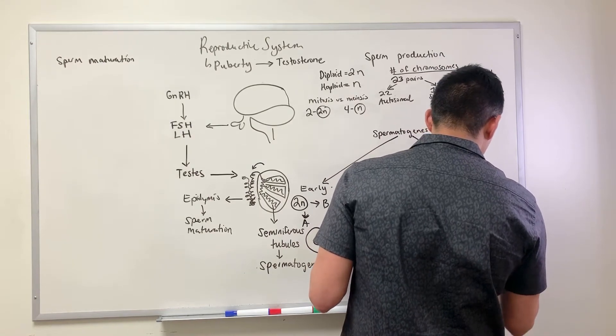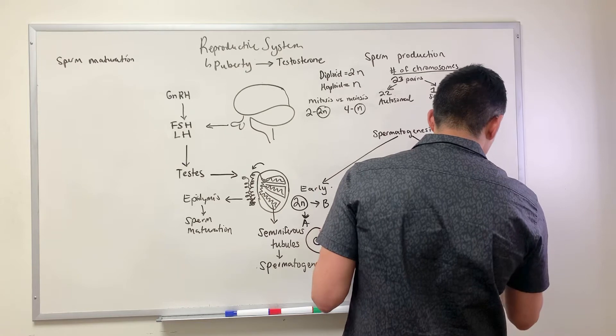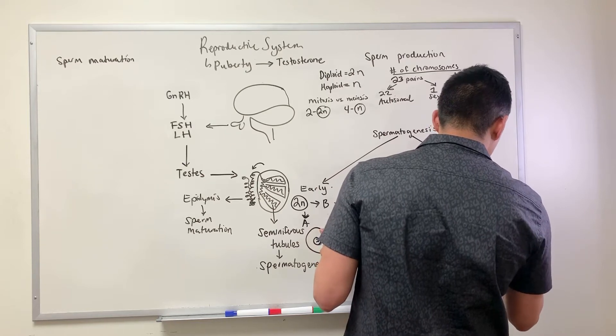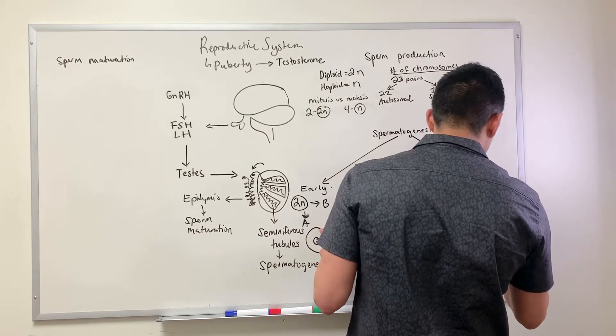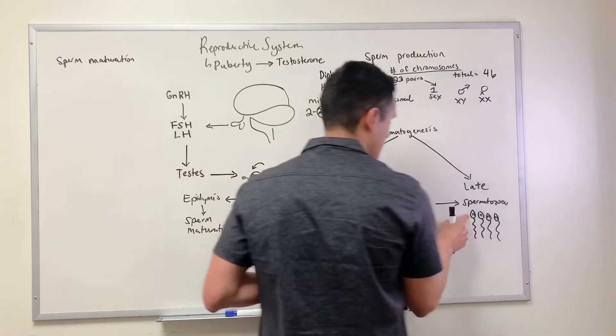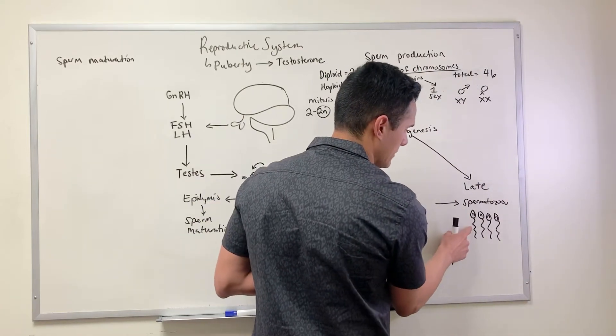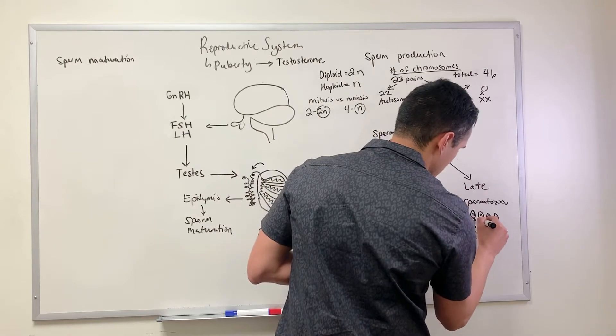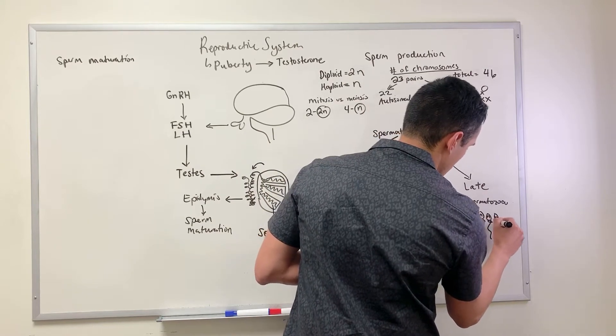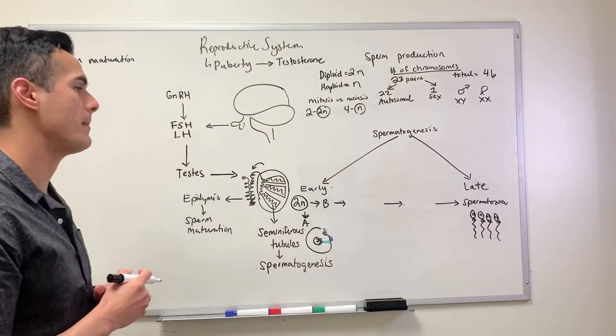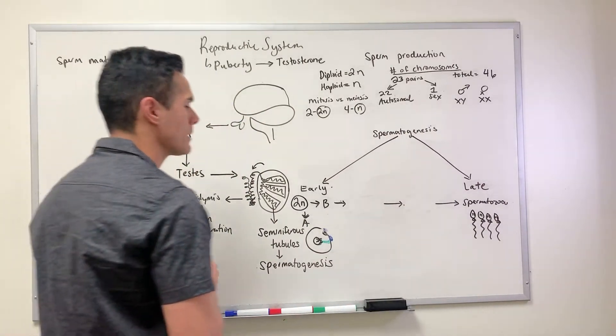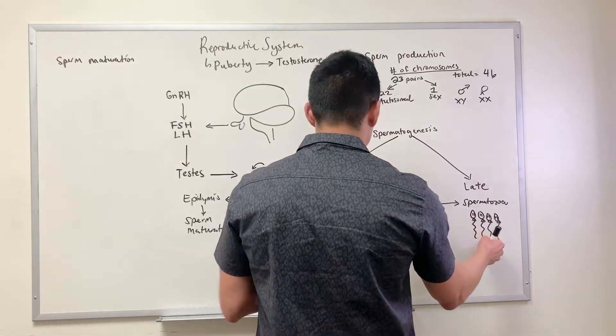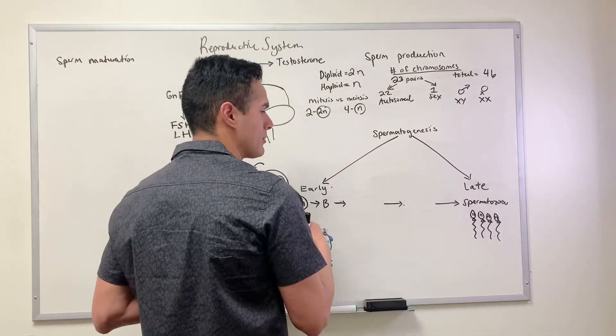Once we get to the end, the spermatozoa look like this: we're going to produce four haploid units. This is the head and then this is the tail of the sperm, and they also contain this part here which is what's left over from the cytoplasmic membrane. But how do we get to this point? Let's work our way backwards.